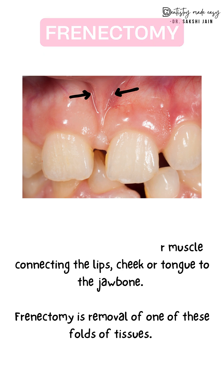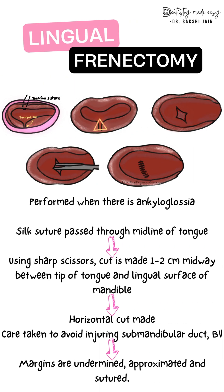Lingual frenectomy is indicated when you want to correct speech. It is also done prior to denture fabrication or construction, as it can interfere with denture stability — every time the tongue is moved, the frenum gets tensed and the denture gets dislodged. Another indication is to improve tongue mobility.